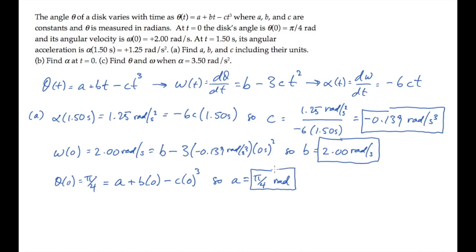In part b, we're asked to find the angular acceleration alpha at time t equals zero. We can do this by just substituting the value of time into the expression, showing that alpha equals zero when t equals zero.